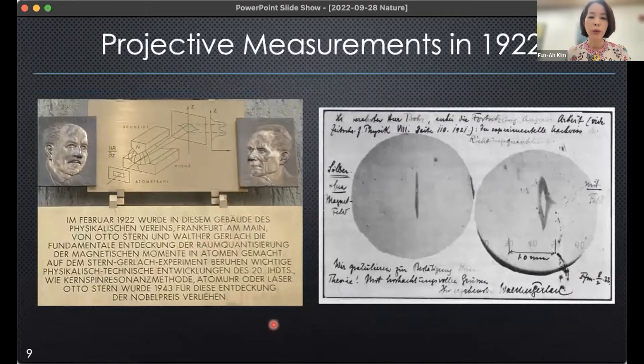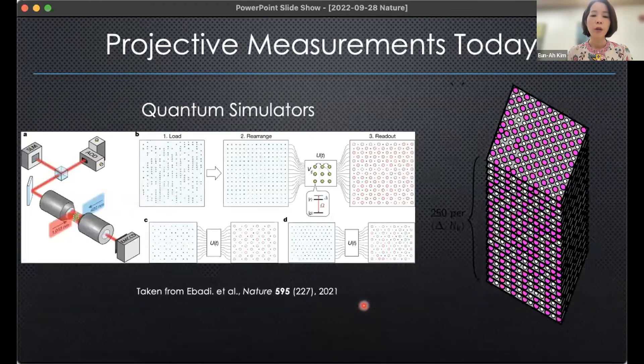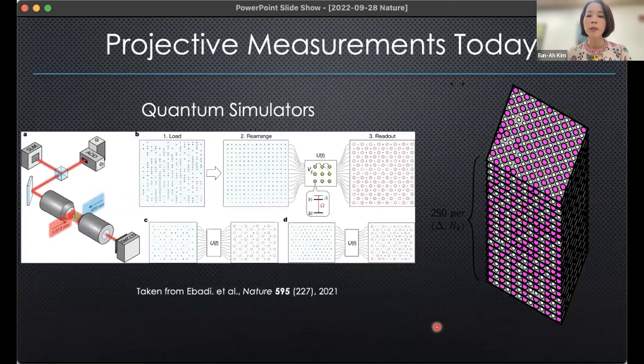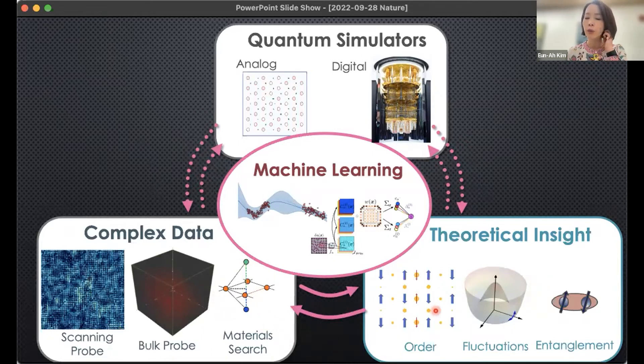Projective measurements. This is a plaque celebrating the Stern-Gerlach experiment that we often learn in introductory quantum mechanics. What this showed was that what seems to be a single polarized beam of silver atoms would actually have two different states superposed in it. This type of projective measurement was probing a Hilbert space of a single spin. But fast forward to today, we can now study Hilbert space of 256 qubits. How can we use machine learning to meet the data-driven challenges and make the most of the data available to us, make a bridge to theoretical insight, and use the theory to predict what should happen in new measurements?